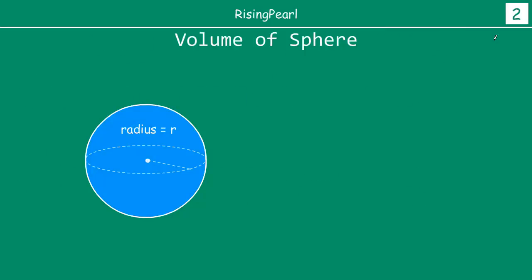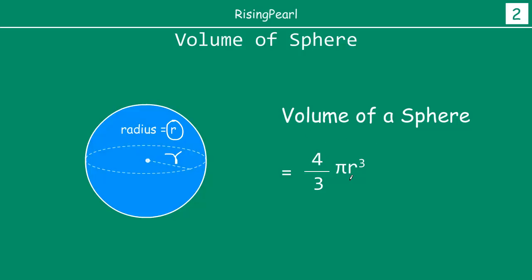Now, for the volume of a sphere, the only important measure we really need to know is the radius r. If you take a sphere and cut through it — drawing a plane that goes right through the middle, through the center of the sphere — then on that plane you will get a circle, and the radius of this circle is r. So the volume of this sphere will be equal to 4/3 π r³. This is the formula for volume of a sphere with radius r.